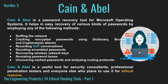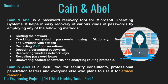Number five: Cain and Abel is a password recovery tool for Microsoft operating systems. It helps in easy recovery of various kinds of passwords by employing methods such as sniffing the network, cracking encrypted passwords using dictionary, brute force and cryptanalysis attacks, recording VoIP conversations, decoding scrambled passwords, recovering wireless network keys, revealing password boxes, uncovering cached passwords, and analyzing routing protocols. Cain and Abel is a useful tool for security consultants, professional penetration testers, and everyone else who plans to use it for ethical reasons.